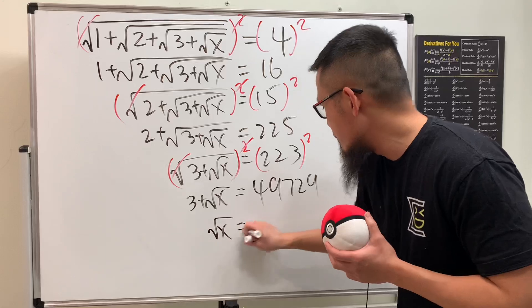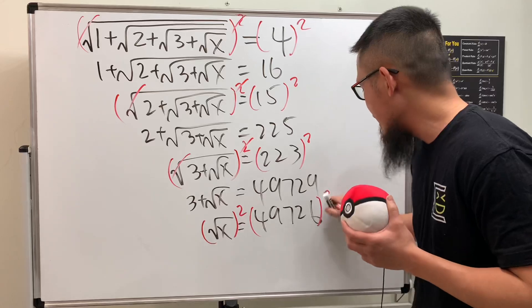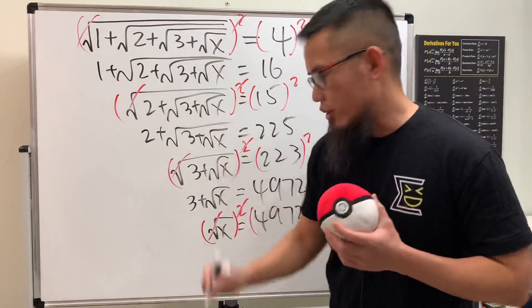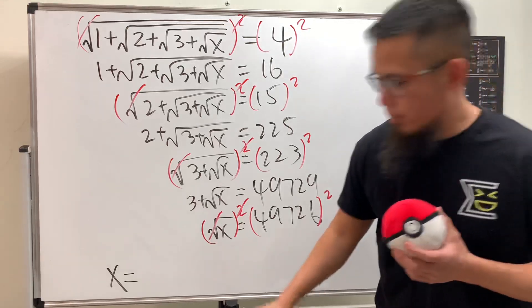so we get the square root of x equals 49,726. Finally, we just have to square both sides. Ladies and gentlemen, we get x equals 2,472,675,076.